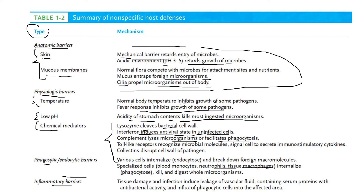Phagocytic cells — monocytes, neutrophils, and macrophages — ingest and digest foreign particles. Inflammatory barriers are caused when tissue is damaged; infection-induced leakage of vascular fluid occurs, containing serum proteins with antimicrobial activity, and there is an influx of phagocytic cells into the infected area. This fluid with antimicrobial activity helps the phagocytic ingestion and clearance of the infection.